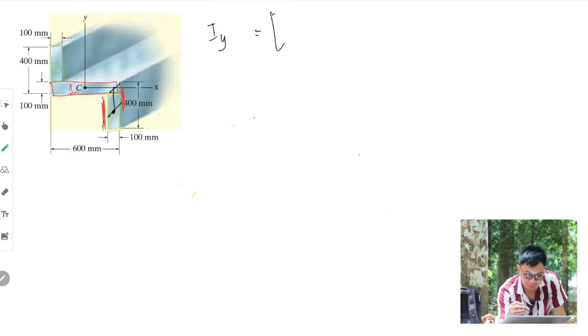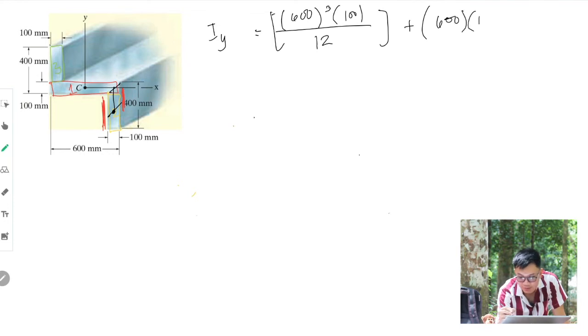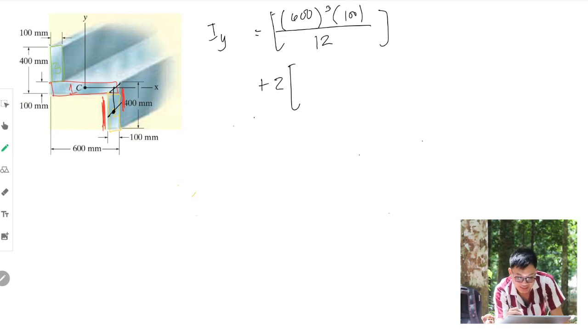Last is Iy. Still using parallel axis theorem. Starting with rectangle 1, that is b cubed h over 12. So 600 cubed times height of 100 over 12. We don't need parallel axis theorem because the centroidal axis is aligned with our first area. Plus, we'll just multiply this by 2 because they have the same values, they're symmetric. Therefore, that is base of 100 cubed times height of 300 over 12.